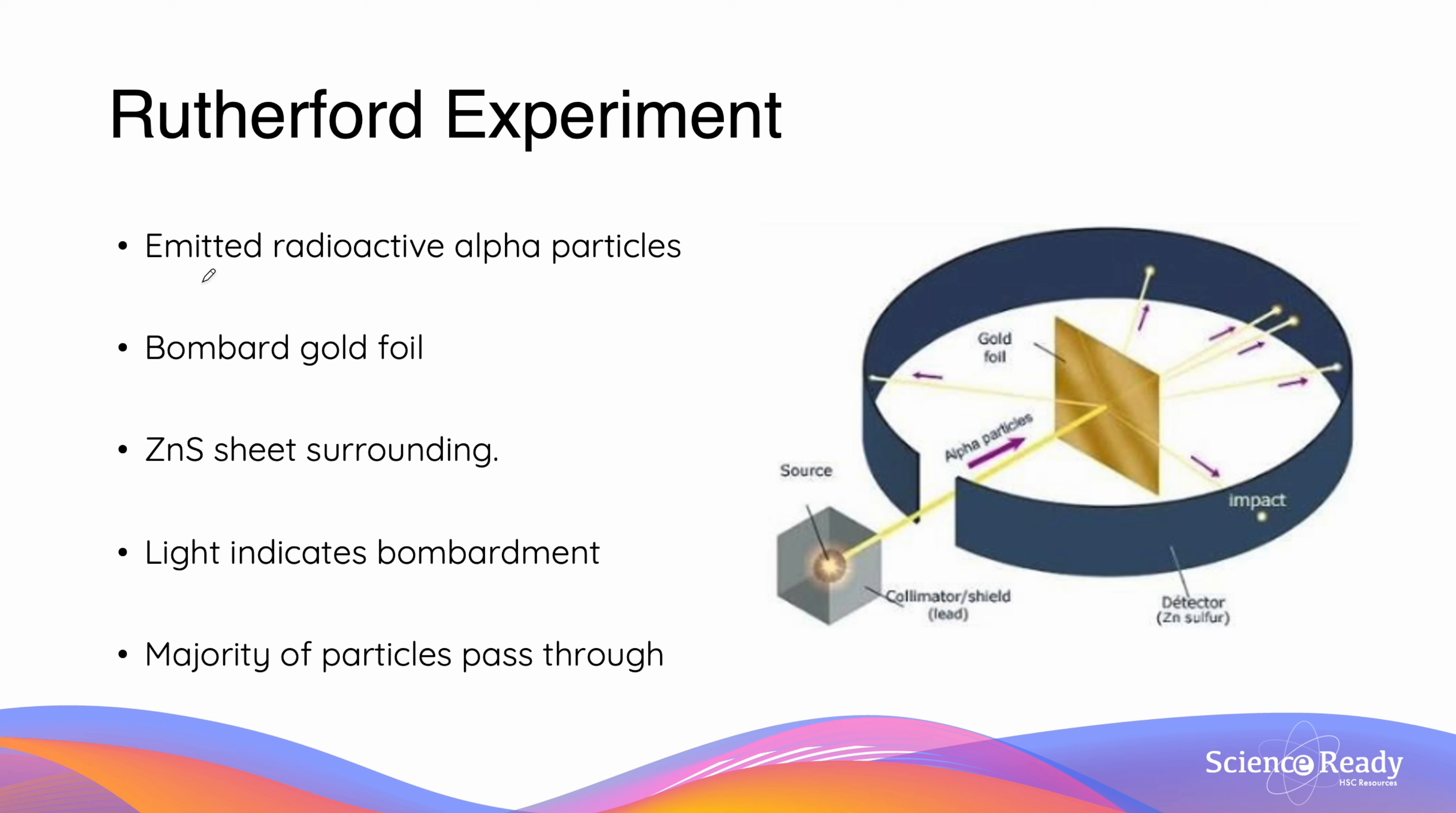He proposed that the atom was made of a dense nucleus and undertook what we now know as Rutherford's gold foil experiment to prove this. In the experiment, he took an alpha emitting source in a box with a cut hole in it.